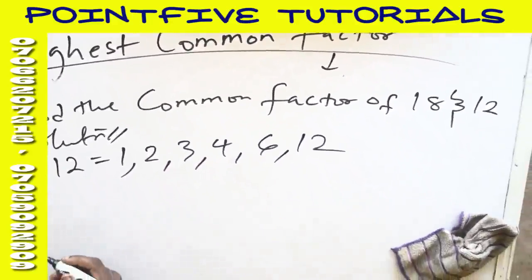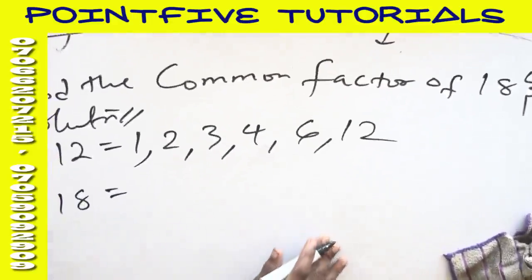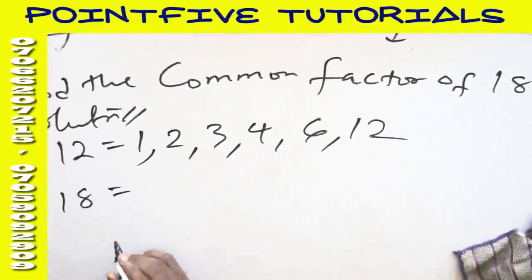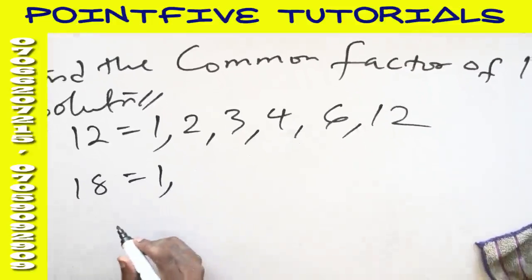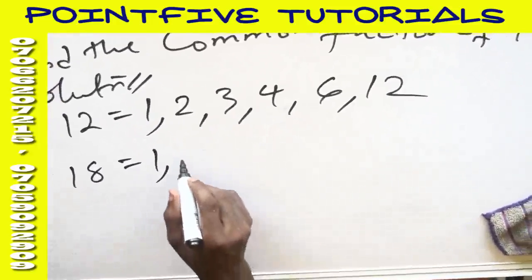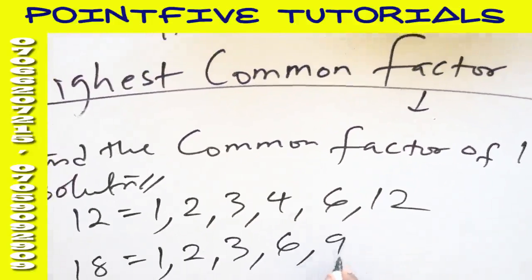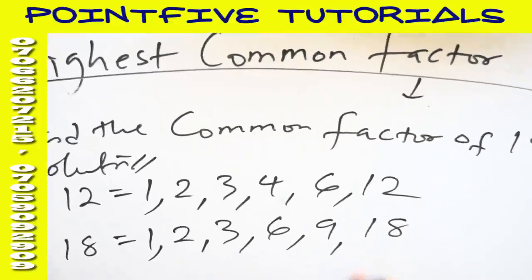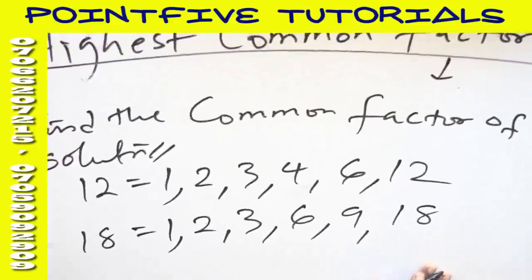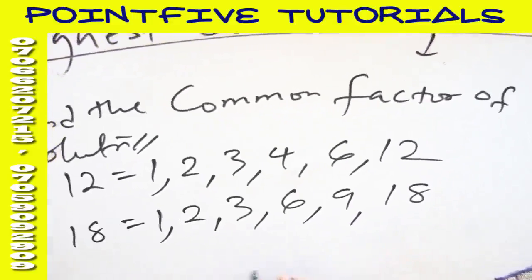You check the factors of 18. The factors of 18 is actually, what numbers can divide 18 without remainder? As usual, we start with 1. We have 1, we have 2, we have 3, we have 6, we have 9, and we have 18. So these are numbers that can divide 18 without remainder. There are the factors of 18.